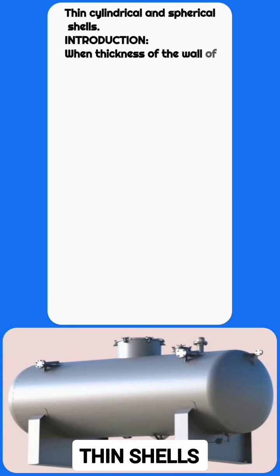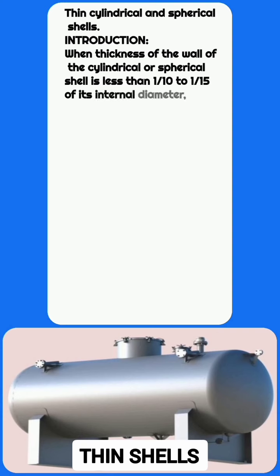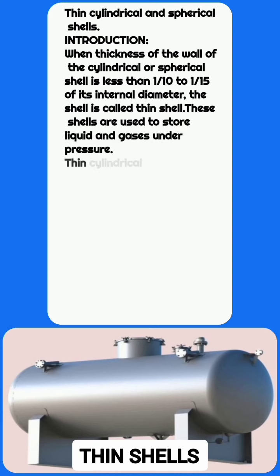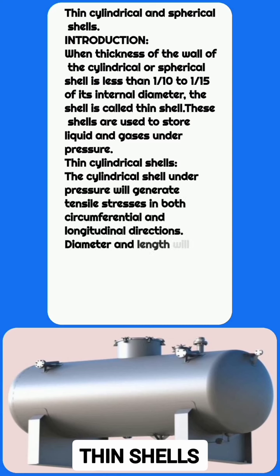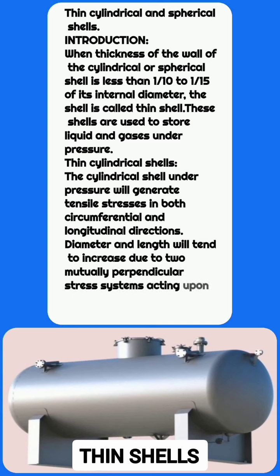When the thickness of the wall of a cylindrical or spherical shell is less than 1/10th to 1/15th of its internal diameter, the shell is called a thin shell. These shells are used to store liquids and gases under pressure. Let us first discuss thin cylindrical shells.